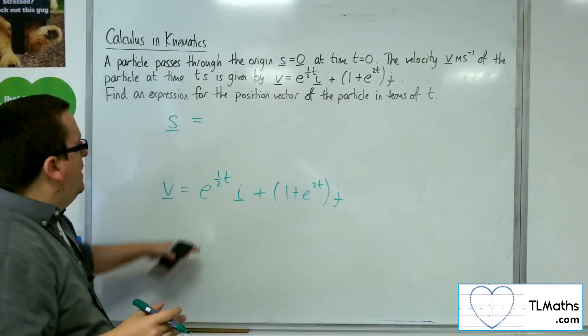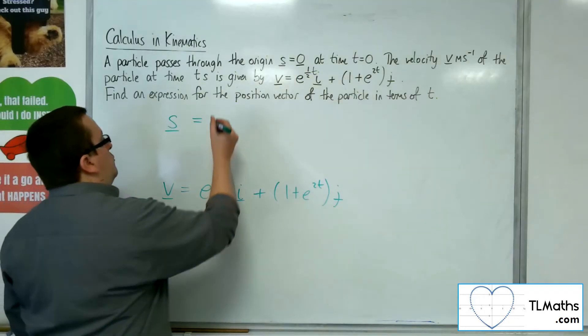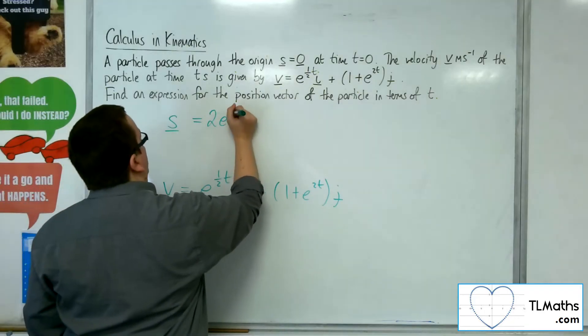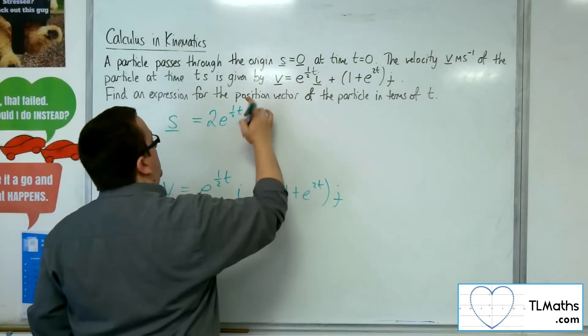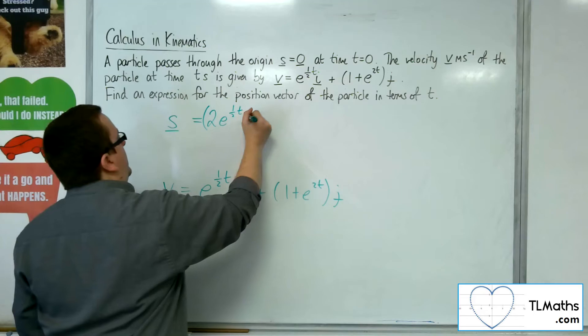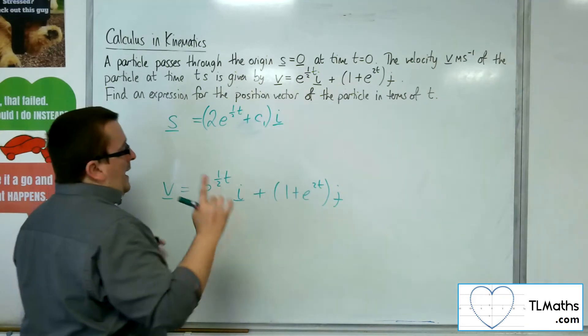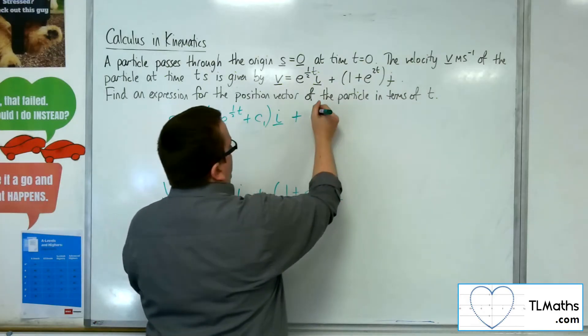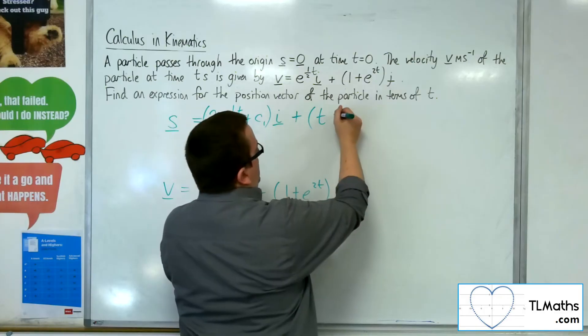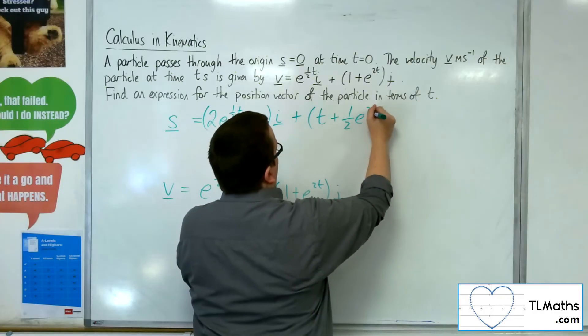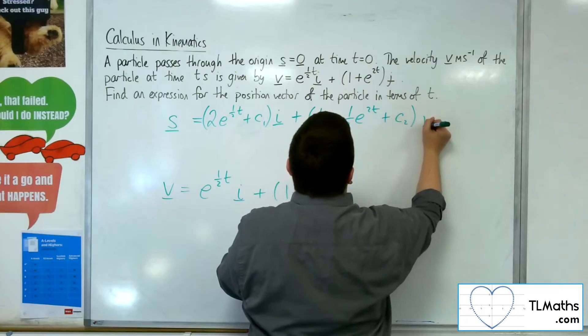So we need to integrate to get to the displacement. e to the half t will integrate to 2e to the half t i, and I'm going to need my constant of integration, so plus c1i. And then plus we've got the 1 integrating to t. e to the 2t integrates to a half e to the 2t, and then I'm going to have my second constant of integration, c2 j.